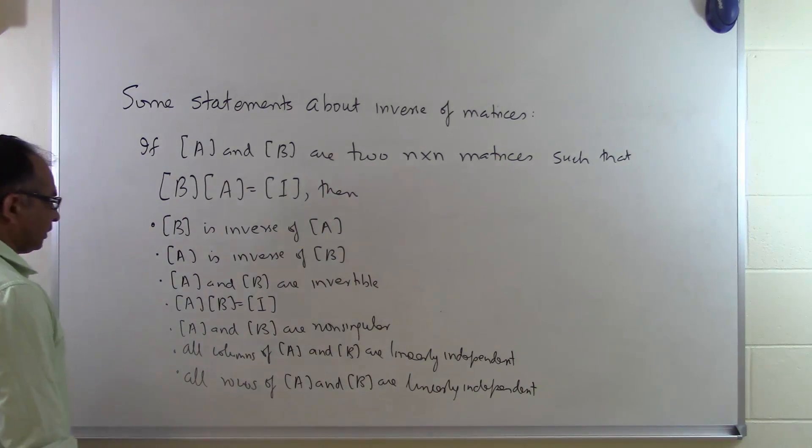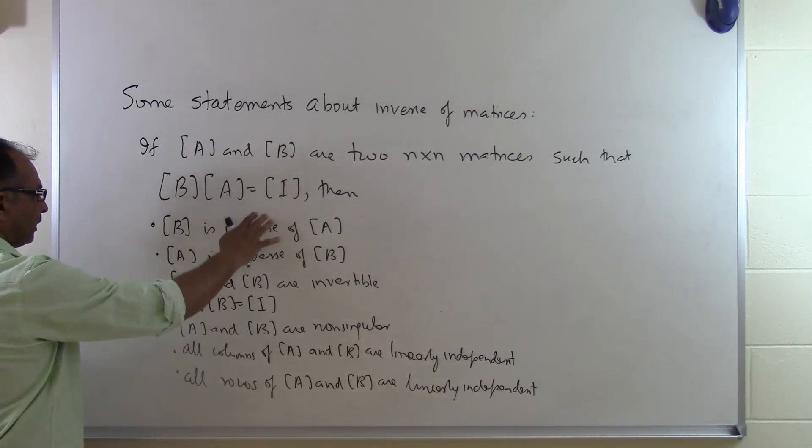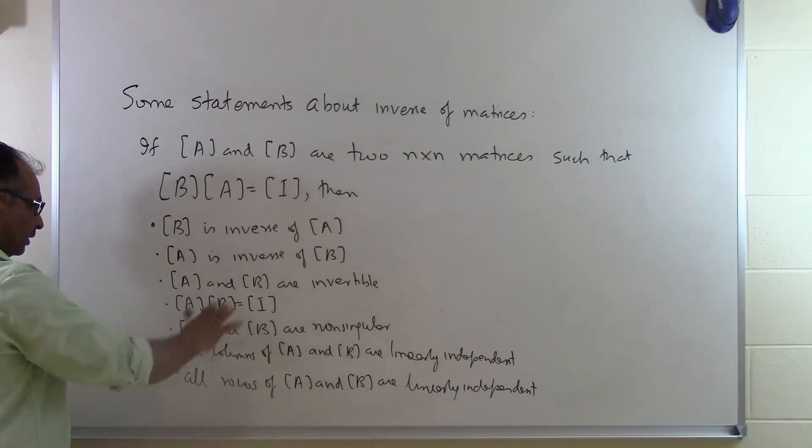So these are some things to think about when you are talking about the inverse of a matrix. To be able to say that B times A is the identity matrix, then B is the inverse of A, A is the inverse of B.